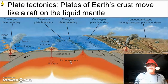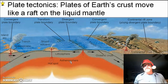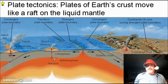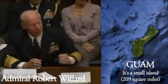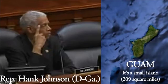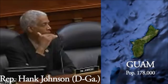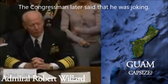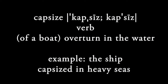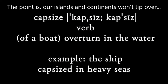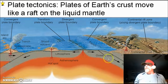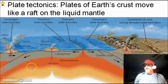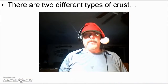Plate tectonics is the idea — the theory — that plates of Earth's crust move like a raft on liquid mantle. One area of confusion is that people think the continents float on water. That is not correct. The water is above the crust itself. We are floating on what's below the crust, which is the mantle — this liquid mantle, or magma.